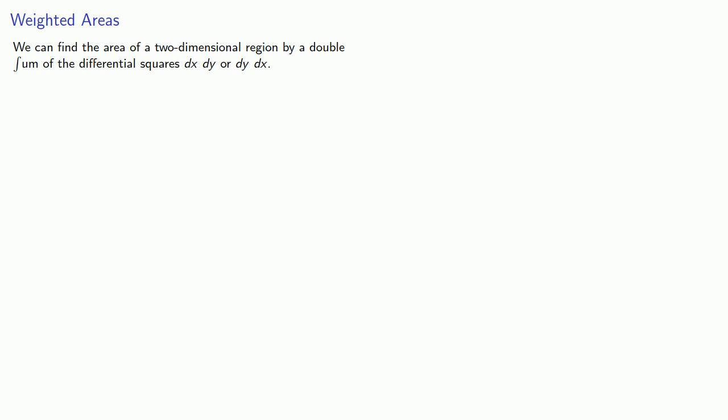We can find the area of a two-dimensional region by a double sum of the differential squares dx dy or dy dx. Now suppose our region is a two-dimensional object whose density changes at different points. We can find the mass using a weighted sum.